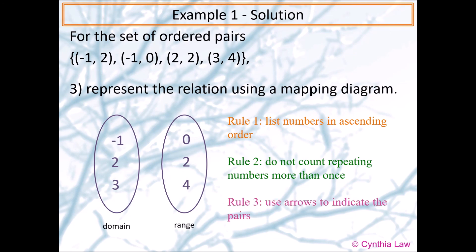Next, we use arrows to indicate the pairs. Negative 1 is mapped to 0 and 2. 2 is mapped to 2. And 3 is mapped to 4. So we have completed a mapping diagram.